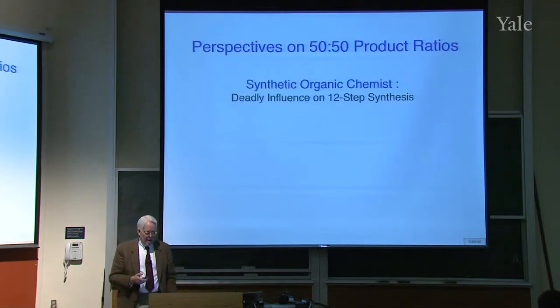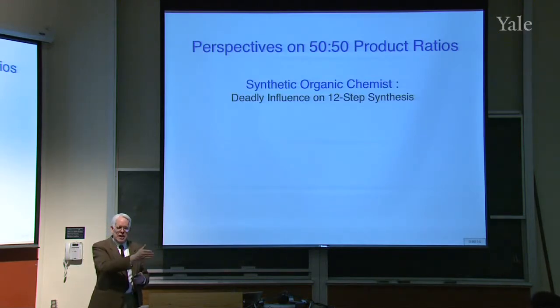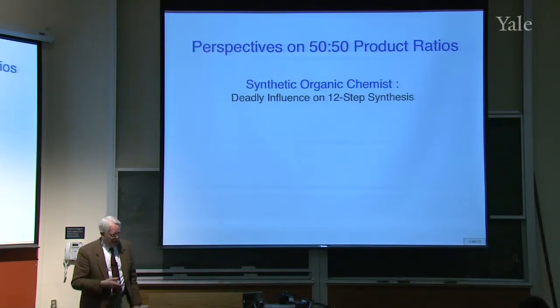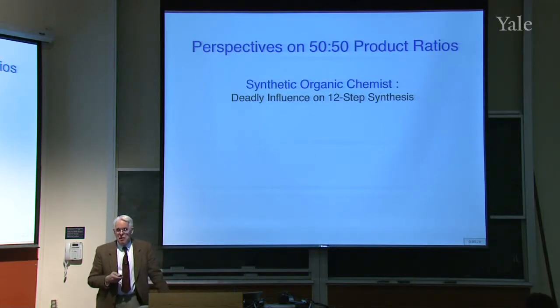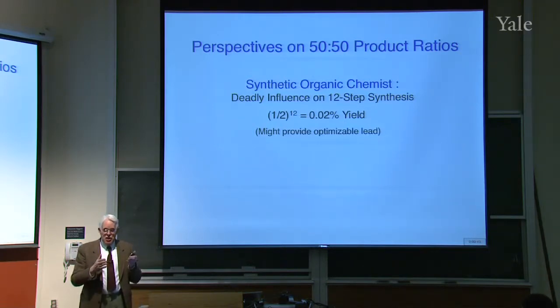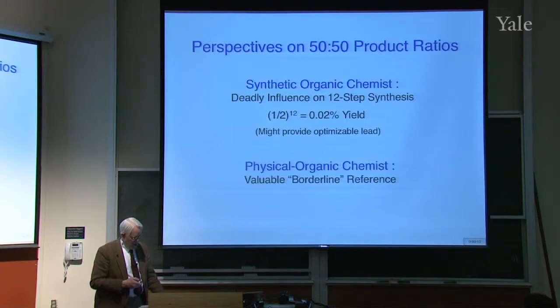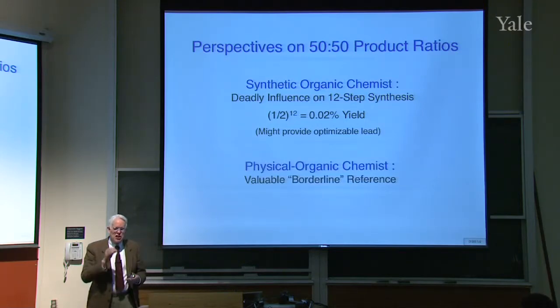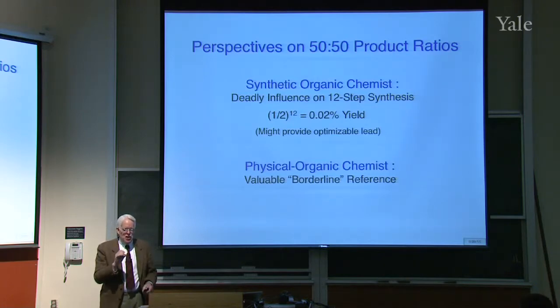What if the ratio is not drastic? What if the two products form in about a 50-50 ratio? The synthetic organic chemist says this is deadly. Because he's doing a lot of reactions in a row. If each reaction has a 50% yield, and you do a whole bunch in sequence, for example, if you did 12 steps getting 50% yield at each step, you'd have a yield at the end of one half to the 12th power, 0.02%. So a synthetic chemist wants a really, really high yield.